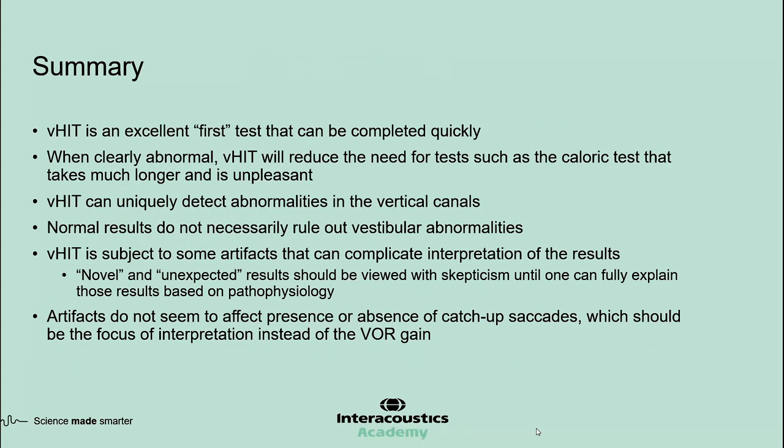In summary, VHIT is an excellent first test that can be done quickly. When clearly abnormal, VHIT reduces the need for tests such as the caloric test that take longer and can be unpleasant. VHIT can uniquely detect abnormalities in the vertical canals — no other test can do that. Normal results do not necessarily rule out vestibular abnormalities. VHIT is subject to artifacts that can complicate interpretation, so if you are getting unexpected results, view them with skepticism until you can fully explain them based on pathophysiology. Artifacts do not seem to affect presence or absence of catch-up saccades, which should be the focus of interpretation rather than VOR gain. Thank you very much for your attention.